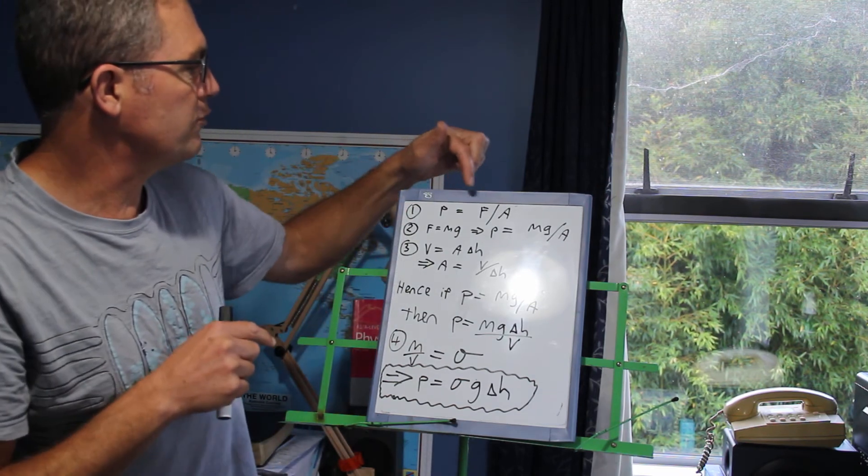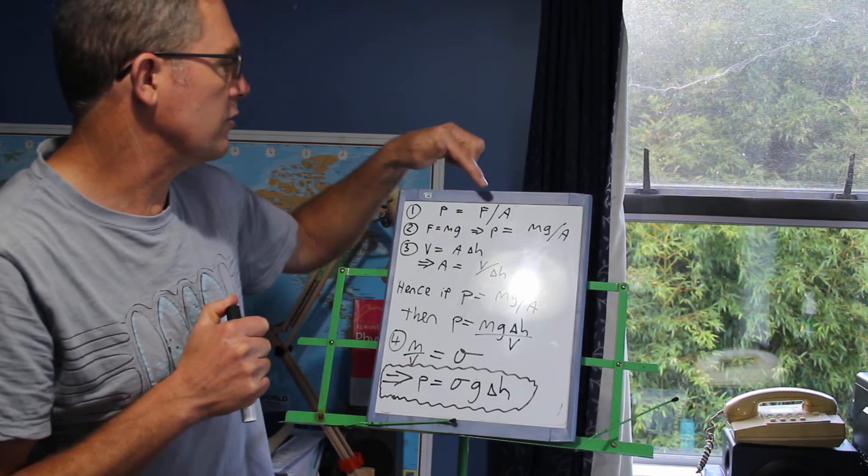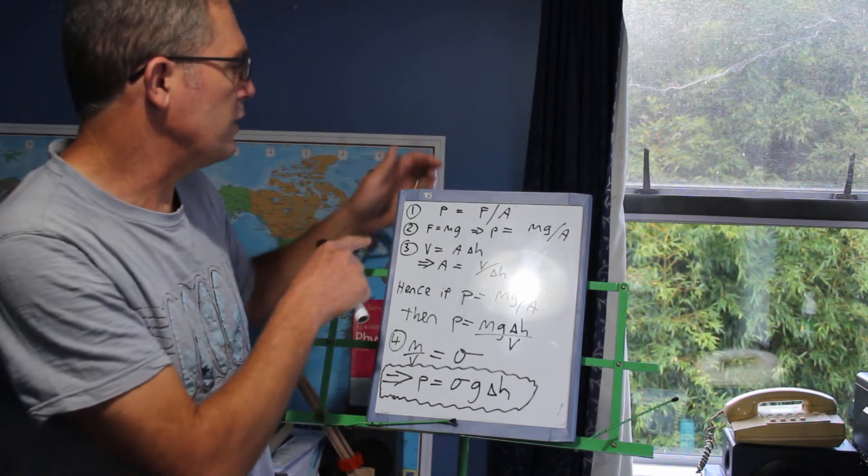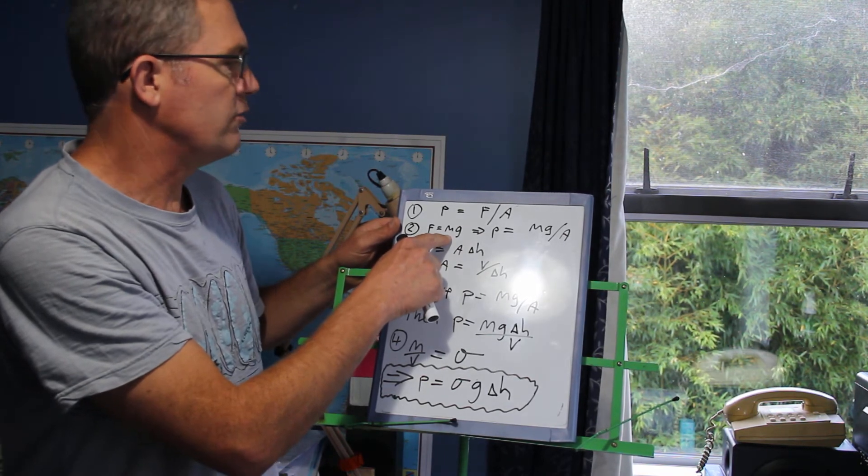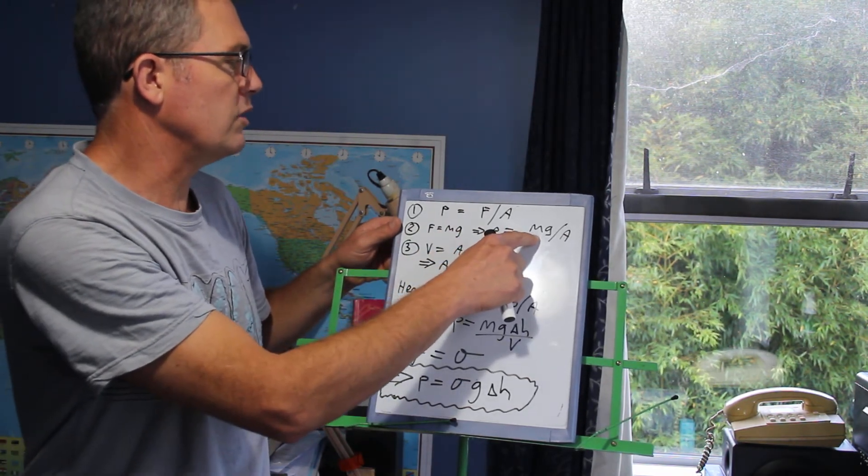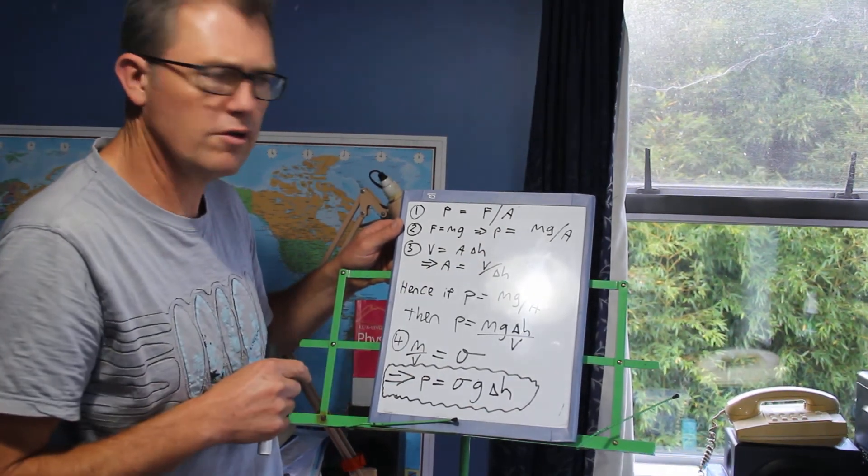Well, first of all, we know pressure equals force divided by area. Easy stuff. You learned that all of three minutes ago. So that's easy. Secondly, we know that force is equal to mass times gravity. So if you substitute, pressure simply equals mass times gravity per unit area. Okay, it's not too bad so far, is it?